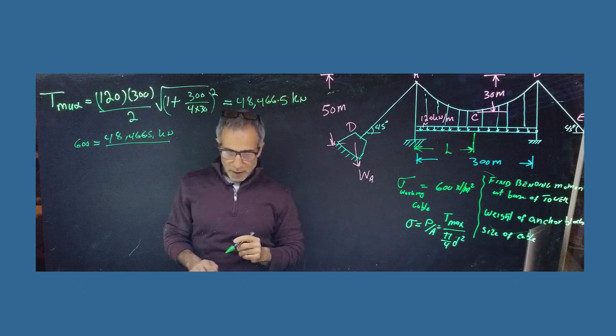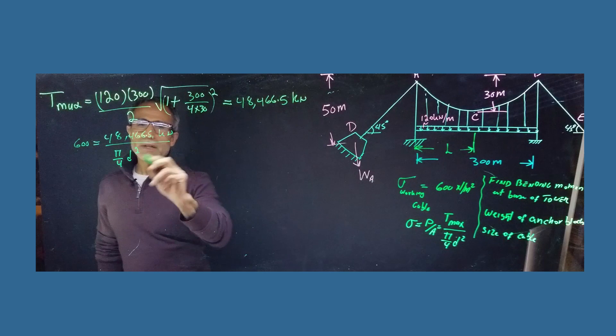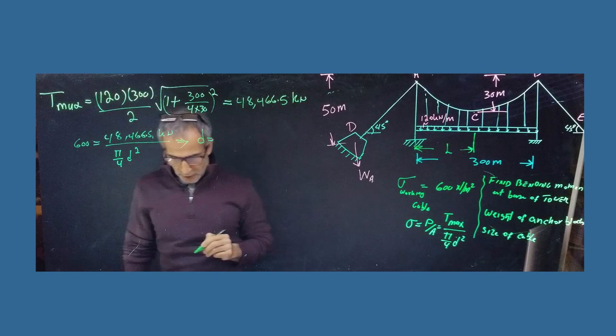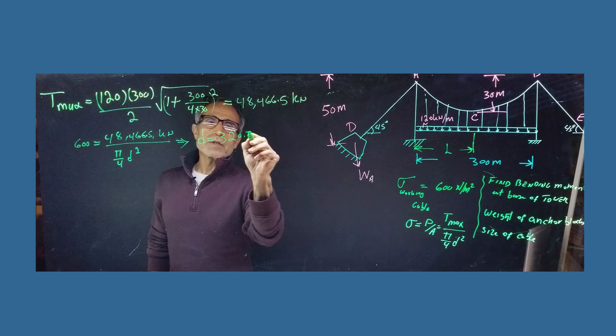and that is equal to 48,466.5 kilonewton. And divide that by area, which is pi divided by 4, and d squared, and you can use your calculator to get it working. So your D is going to come out to, what I have is 320.7 millimeter.